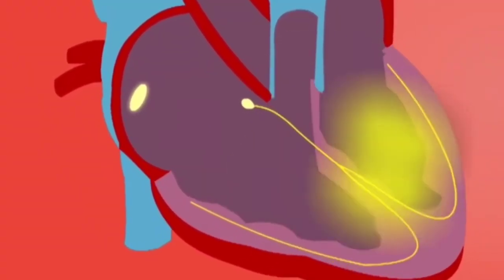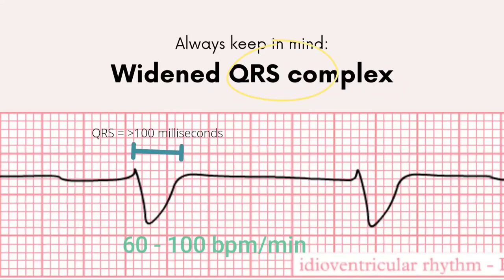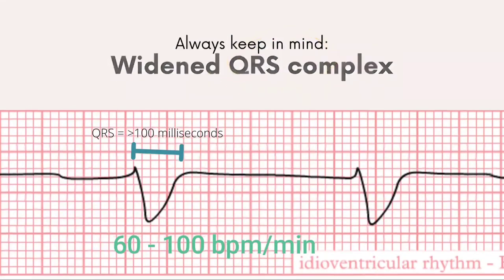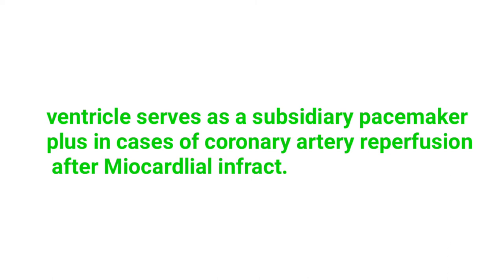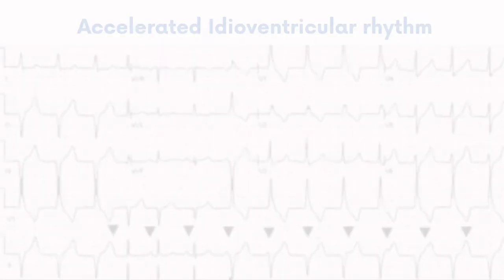Accelerated idioventricular rhythm, or AIVR, is a regular rhythm of ventricular origin that typically has a widened QRS complex at a rate of 60 to 100 per minute. It is often seen in cases of AV block in which the ventricle serves as a subsidiary pacemaker, and in cases of coronary artery reperfusion after myocardial infarction. AIVR is similar to idioventricular rhythm except it is faster.